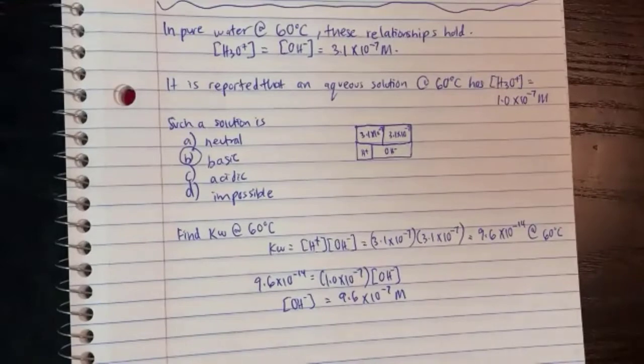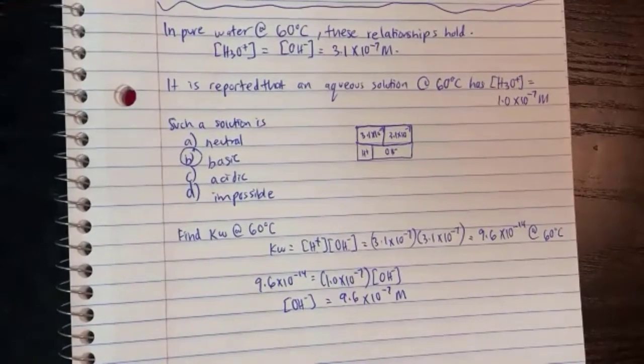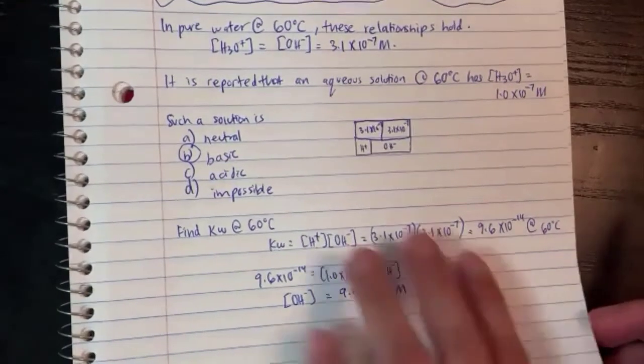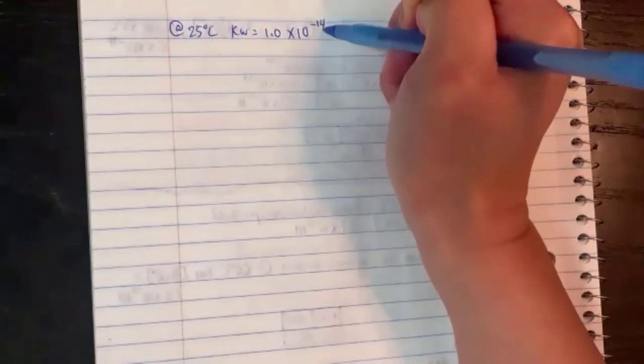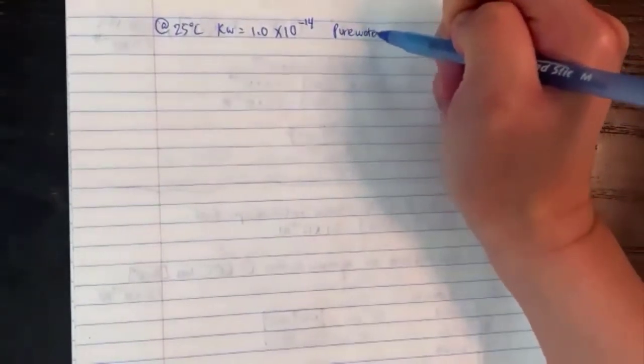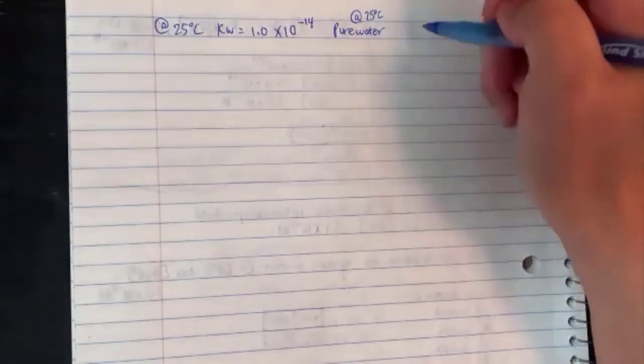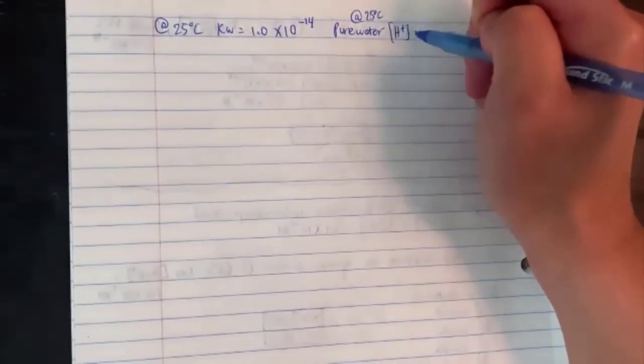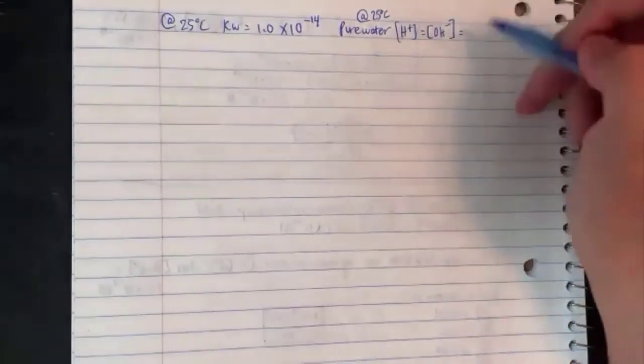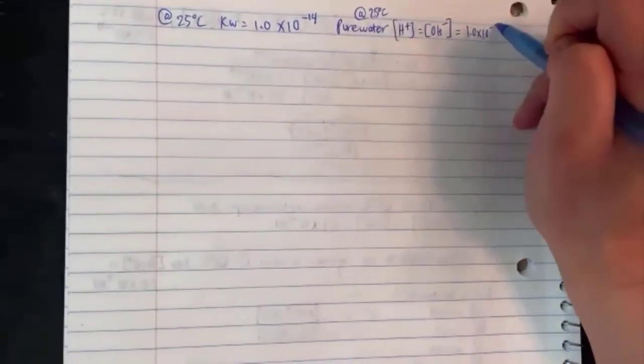We did a bunch of different temperatures — 50 degrees, 60 degrees. Now let's go back to regular room temperature. Remember: 25 degrees KW is 1.0×10⁻¹⁴. And for pure water at 25 degrees, H⁺ and OH⁻ are the exact same number: 1.0×10⁻⁷ molarity.